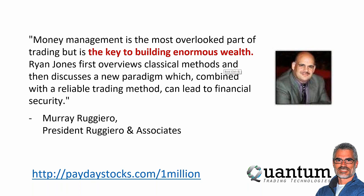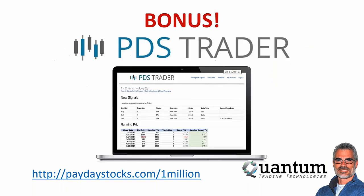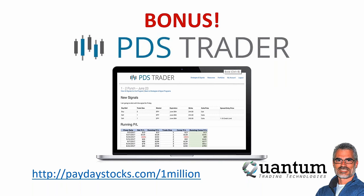That projection graph was created with a program I had created called PDS Trader. I'm going to give you six months of PDS Trader as well. You'll access the signals through PDS Trader and also have the ability to start building your own trades, creating a trade builder that will show you the projection. I have 10 to 12 windows of PDS Trader open at any given time — that's how much I use it for my weekly options trades. Here's everything included: One-Two Punch strategy, 27 Weekly Option strategy, Time Warp Low Volatility strategy, Hedged Option strategy, Maximizing Calendar Spreads, the Power of PPD training, and the five-year one-million-dollar compounding plan.